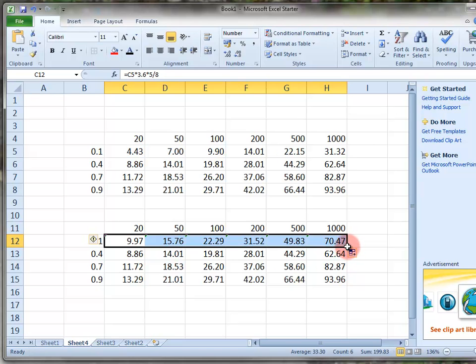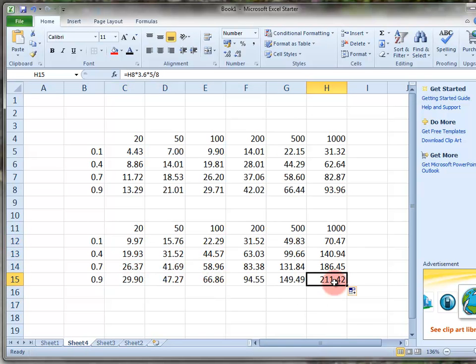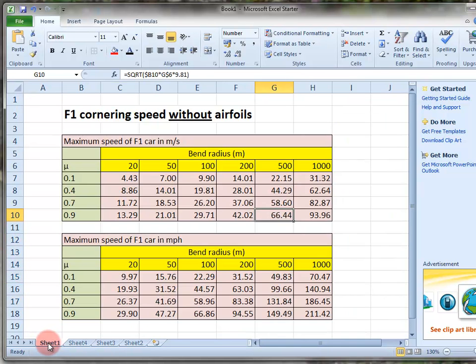See that I'm clicking on the black square in the corner and that's it. So this should be 211.42 and it is 211.42.